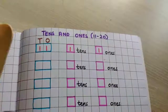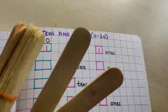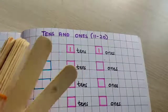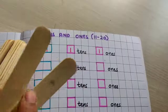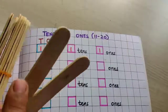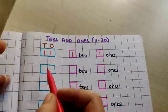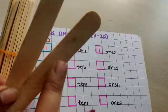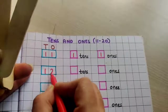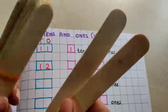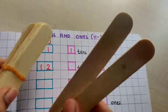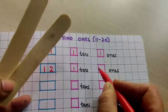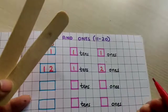Now if I am adding one more stick, I have a set of 10 and 2 single sticks. So this is 1 ten and 2 ones. 10 and 2 are 12 — so the number 12. How is the number 12 formed? By 1 set of 10, so I have 1 ten, and how many ones? I have 2 ones.